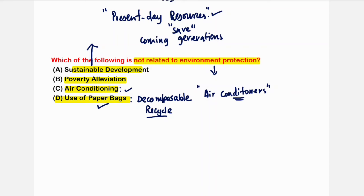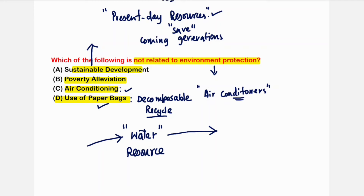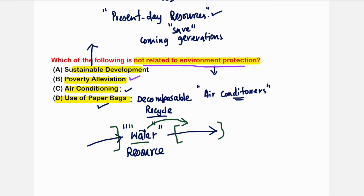Sustainability means we should meet our present-day needs without compromising the ability of future generations to meet their own needs. For example, we need water but so do future generations, so we must use it wisely. Option B — poverty elevation — is the correct answer as it is not directly related to environmental protection; the rest are all relevant.